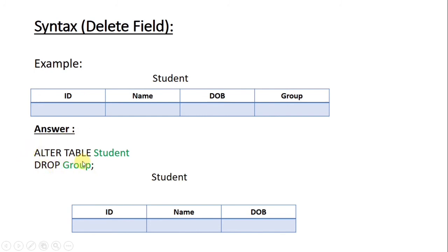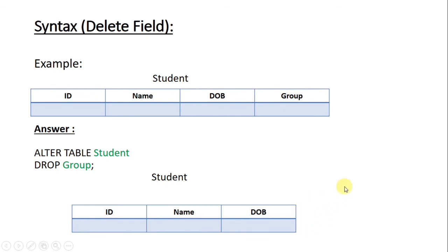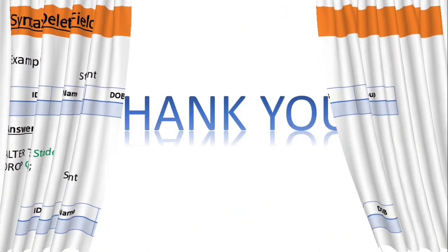This is the SQL command to delete a field — here we delete the group field. In the output you can see the student table with id, name, and dob — there is no group field. So my dear students, it's very easy. If you want to learn and practice more and more, this will become very easy for you. That's all for today. Hope you have learned from my class. If you have any problem, ask me or ask your subject teacher. Don't stop learning. Keep practicing.